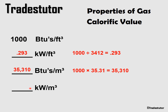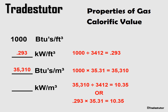For the fourth value — kilowatts per cubic meter — we can do it two ways. We can go from kilowatts per cubic foot and multiply by 35.31 to convert to kilowatts per cubic meter, or we can go from BTUs per cubic meter and divide by 3412 to get kilowatts per cubic meter. Either path works, giving us our final converted calorific value.